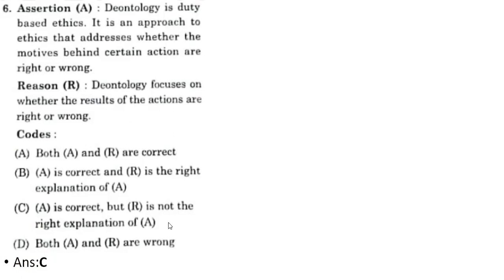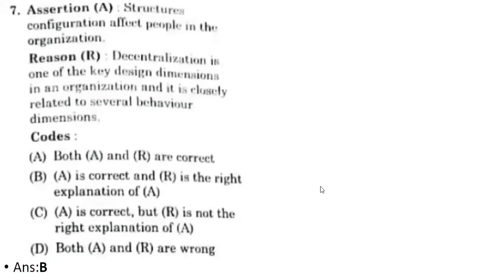Seventh question — assertion and reasoning: Structural configuration affects people in an organization. The reason is decentralization is one of the key design dimensions in an organization and is closely related to several behavioral dimensions. The correct option is B — A is correct and R is the right explanation of A.